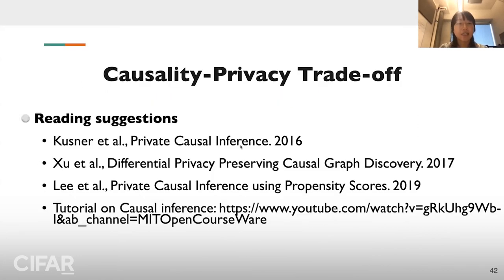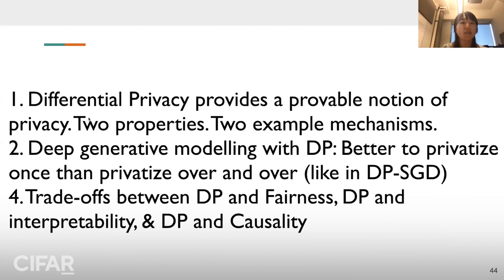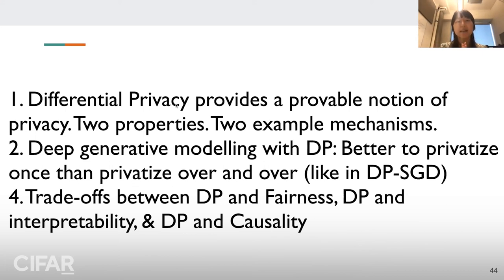For the causality-privacy trade-off, I'll only provide reading suggestions due to time constraints. To summarize today's lecture: we talked about differential privacy as a gold standard privacy notion with provable guarantees. We covered two mechanisms — Laplace and Gaussian — and two key properties: post-processing invariance and composition. We also covered differentially private generative modeling, and the trade-offs between differential privacy and fairness, interpretability, and causality.